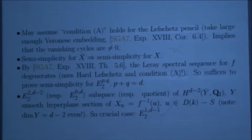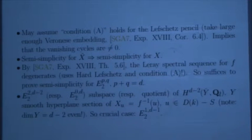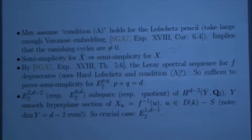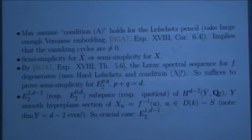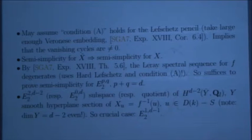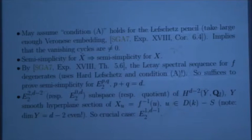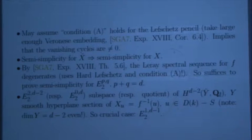Degenerate means that the abutment is the direct sum of the E_2 terms. The terms p=0 and p=2 are easy to handle because they reduce to the cohomology: you take one smooth fiber of F and inside take a hyperplane section, so the dimension goes down from D to D−2, still even, and we can apply induction. The crucial case is E_2^{1, D−1} — it's exactly the same reduction as in Weil II.